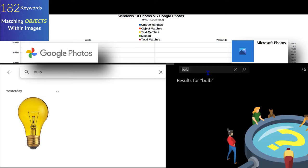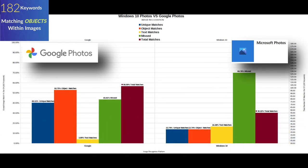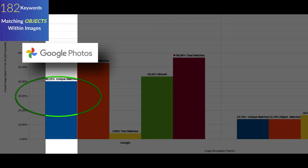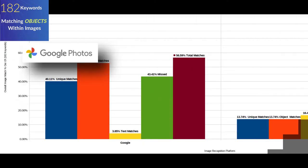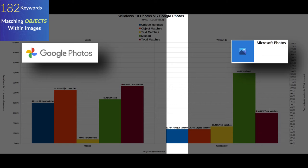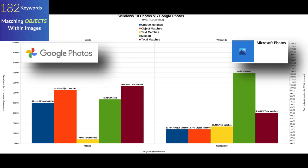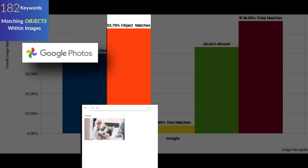Looking at the results chart, Google Photos has a superior advantage when it comes to matching keywords to objects within images. Google found 40.11% of matches that Windows 10 missed, while Windows 10 found 13.74% of matches that Google missed out of 182 keyword searches. Out of those 182 keywords, Google returned an image result of an object within the image 52.75% of the time.